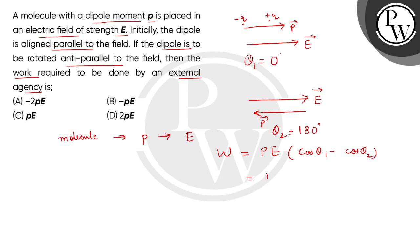So, work done को हम express करते हैं P E within bracket cos theta 1 minus cos theta 2 से. So, values put कर देंगे. Theta 1 is 0 degree and theta 2 is 180 degree. अब बच्चियों cos 0 degree की value होती है 1 and cos 180 degree की value होती है minus 1.